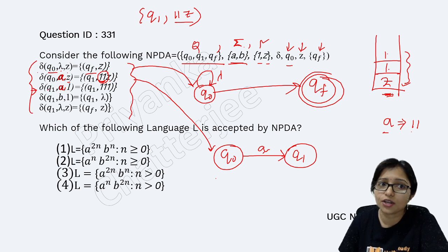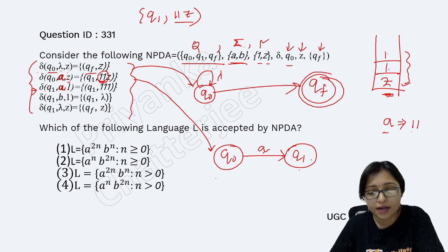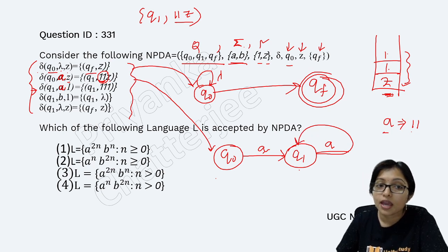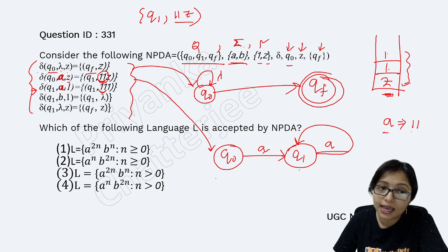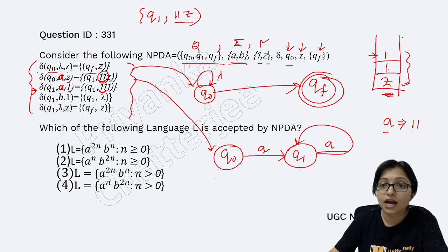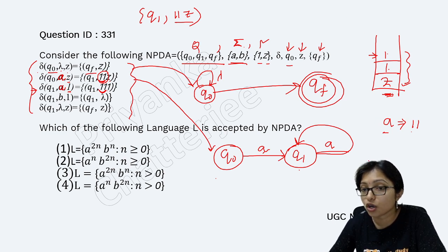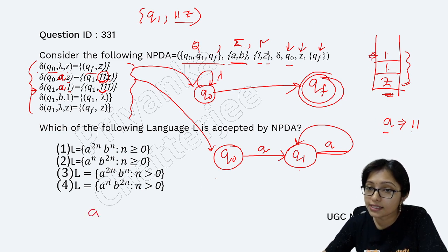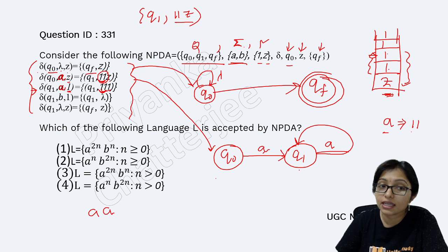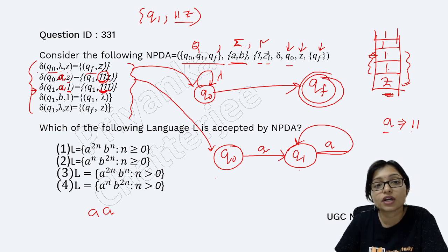Now the third transition: when I am in q1 and getting another a, I stay in q1 — I am not changing my state. And I am inserting again 11. Because in the top of the stack there was already 1, and now I am inserting another 11 on top of that existing 1. So that's why we write 111 here — it was already 1 there, and after that whatever I am inserting — that's why here it is written as 111.